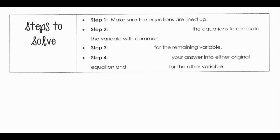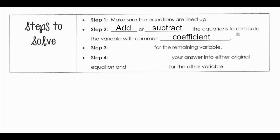When we solve systems by elimination, we can follow these steps. First, we want to make sure the equations are lined up — x's together, y's together, and constants together. Then we want to add or subtract the equations to eliminate the variable with the common coefficient. When we identify what variable has the same number in front, we add if the variables are opposites, or subtract if the variables are the same.